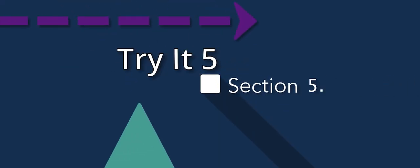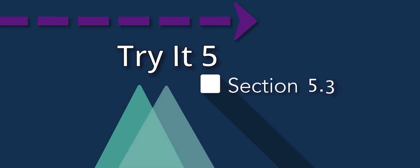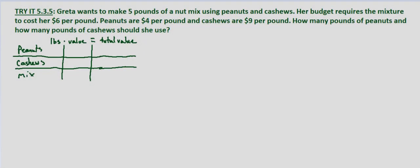In this problem we're told that Greta wants to make 5 pounds of a nut mix using peanuts and cashews. Her budget requires the mixture to cost her $6 per pound. Peanuts are $4 per pound and cashews are $9 per pound. We're asked how many pounds of peanuts and how many pounds of cashews should she use.